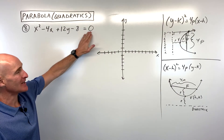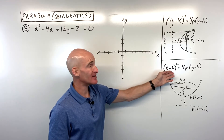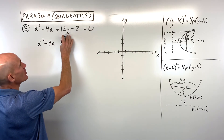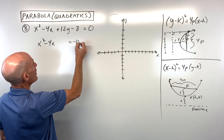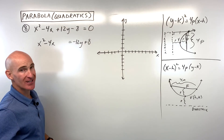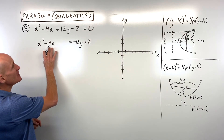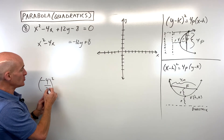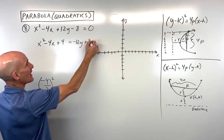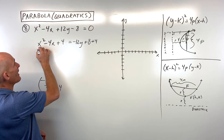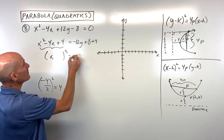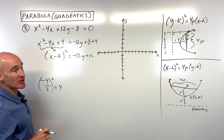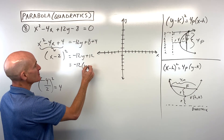For number 8: x² - 4x + 12y - 8 = 0. This is an x-squared type, so we'll put it into the standard form by completing the square. Get the x's on the left: x² - 4x = -12y + 8. Take the b value: -4 divided by 2 is -2, squared is 4. Add 4 to both sides.